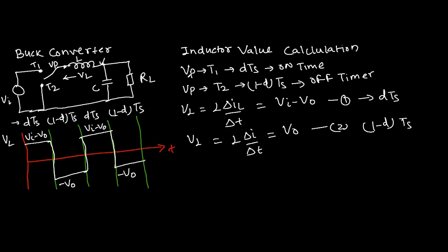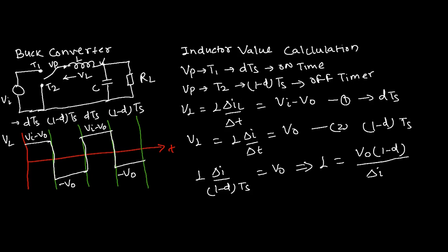We know that the off-time voltage across the inductor can be written as L·(ΔI / ((1−D)·Ts)) = V0. Solving this for L: L = V0 · (1−D) / (ΔI · (1/Fs)), where Ts = 1/Fs is the switching period. That is how you use this equation to calculate the inductor value.